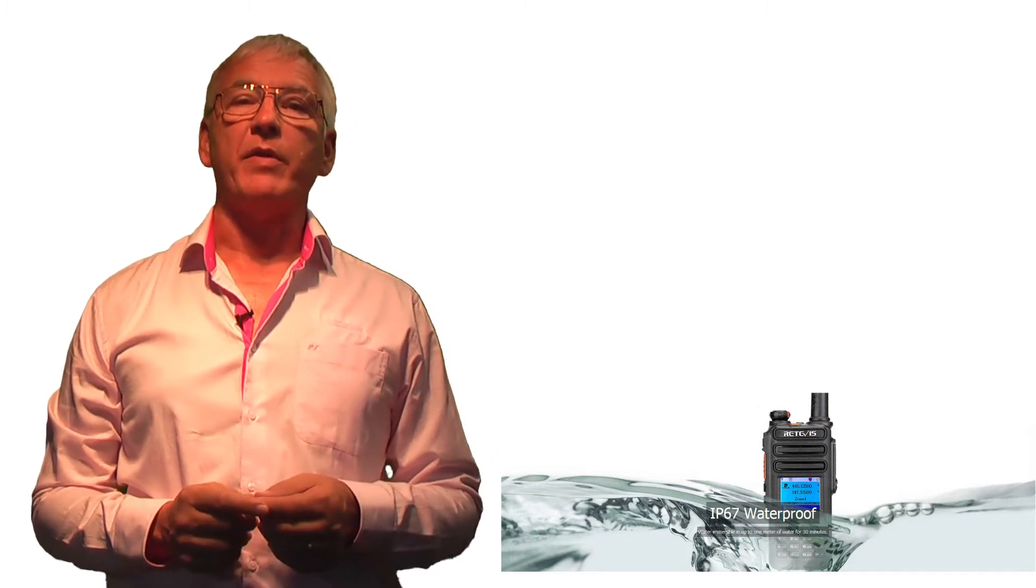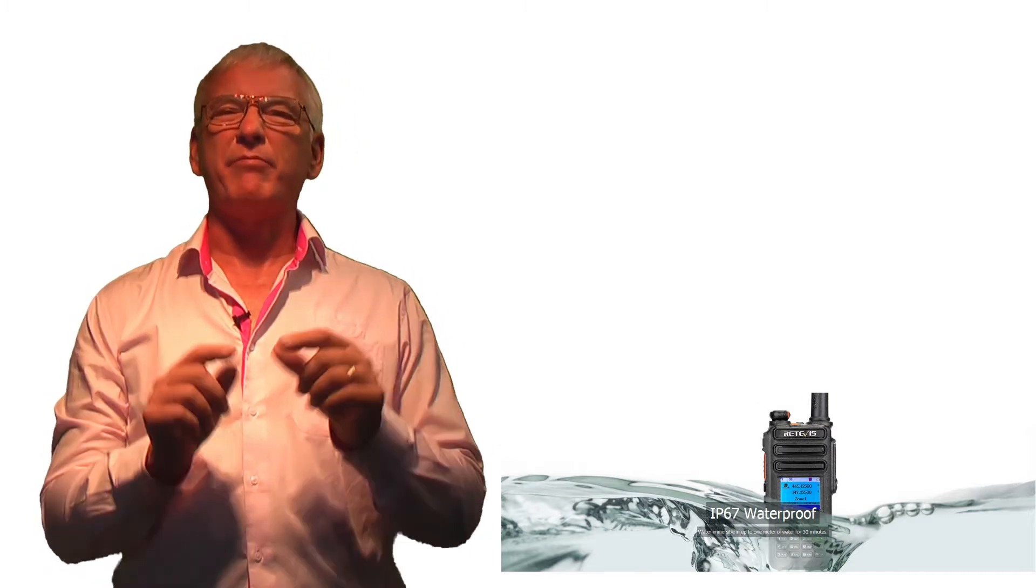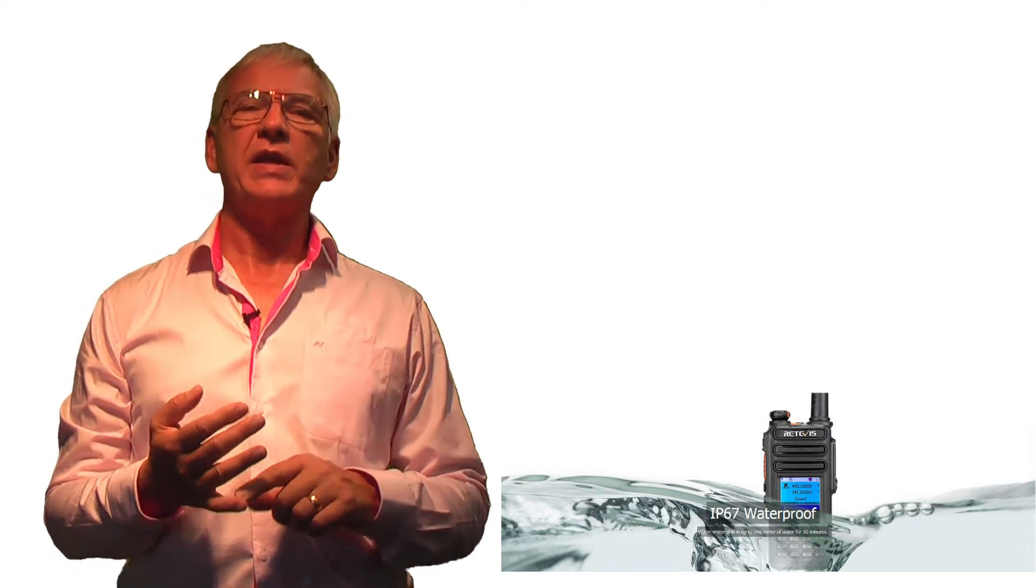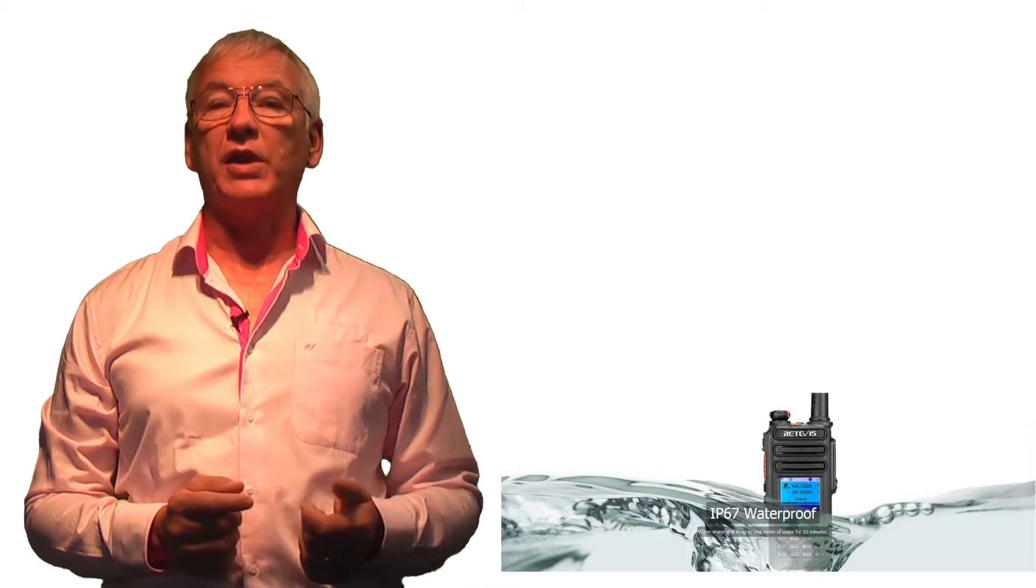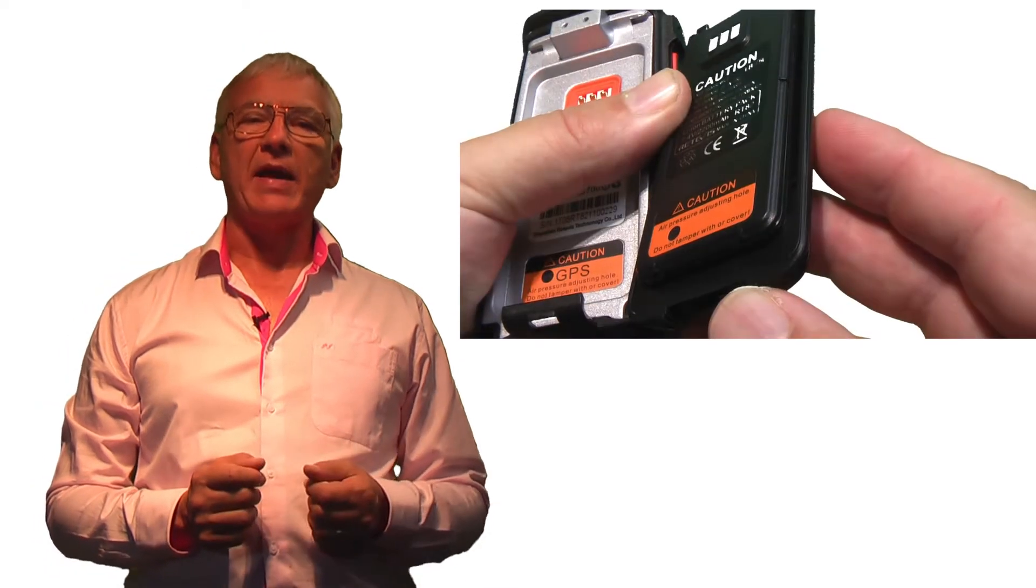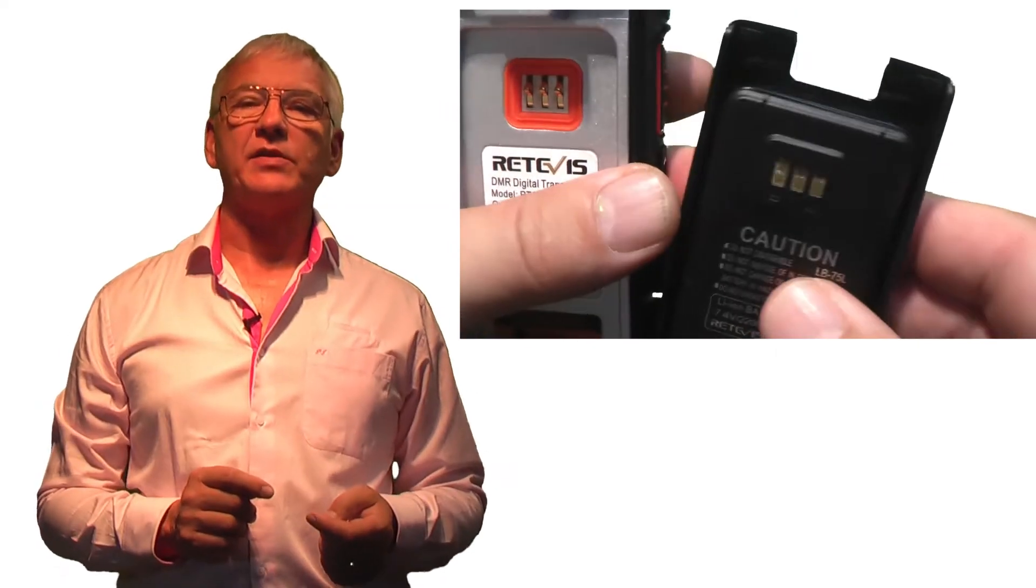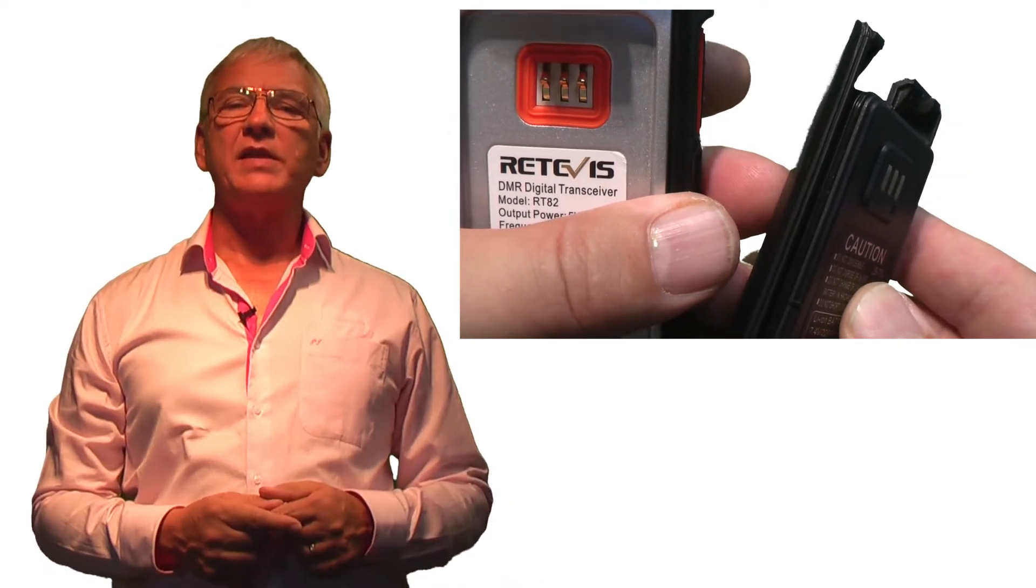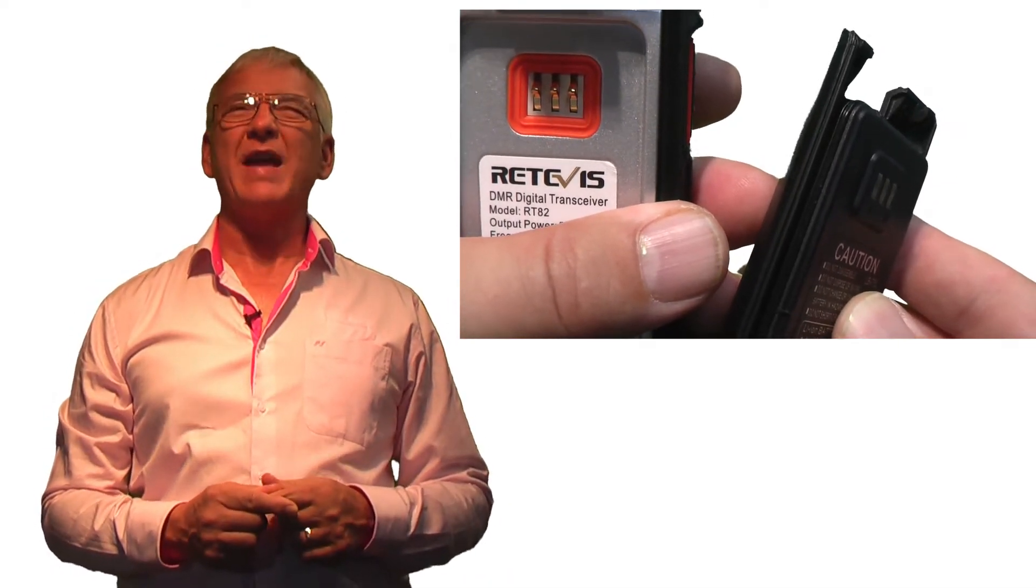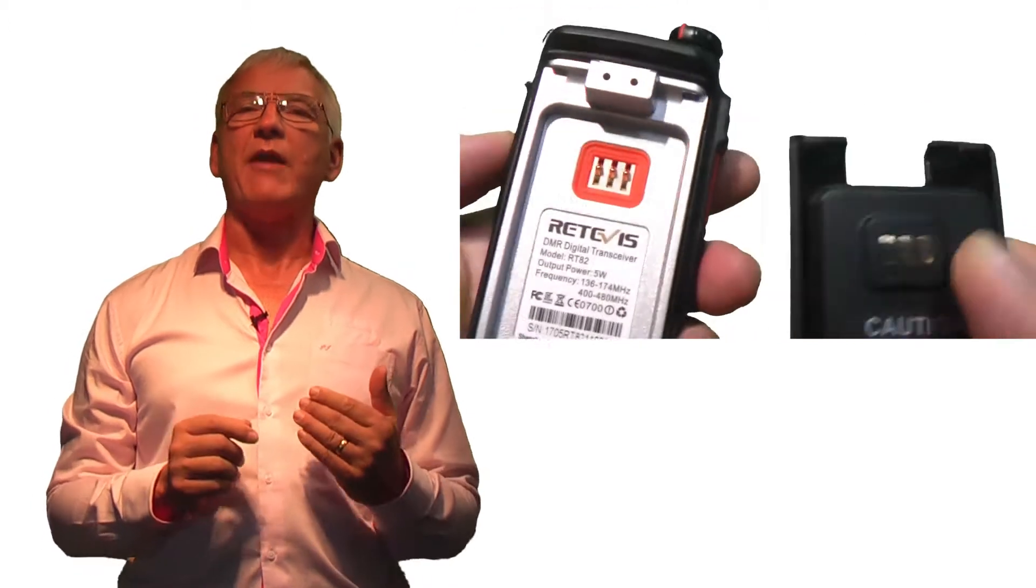In practice this kind of immersion protection is done by using membranes to seal open areas like the loudspeaker and microphone apertures and then neoprene or other soft seals around the control shafts. In this radio a close inspection shows that the battery pack has an inner seal that gets compressed by the chassis rather than one that goes around the edges. This is a better arrangement because edge seals always seem to wear if the battery is removed and replaced frequently.